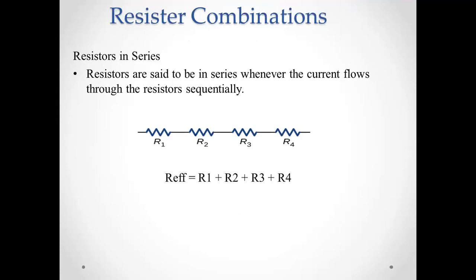In a series connection, resistances R1, R2, R3 are placed sequentially. The current flow is the same through each resistor. The voltage drop is different across each resistor — different across R1, R2, and R3. That is the series connection of resistance, where resistors are connected one after another.